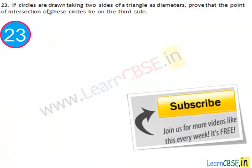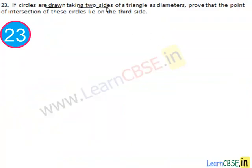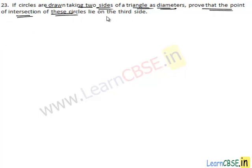Let's move to the next question. If two circles are drawn taking two sides of a triangle as diameters, we have to prove that the point of intersection of these circles lies on the third side.